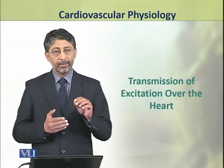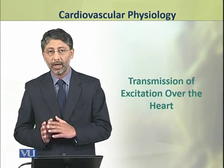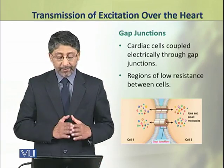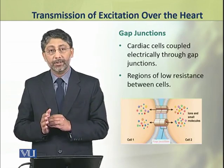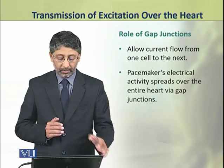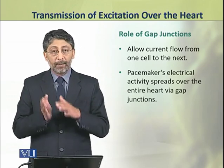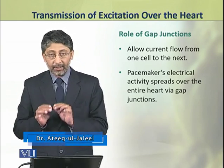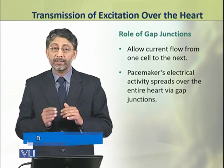In this topic we shall discuss the transmission or spread of excitation over the heart. The cardiac cells are coupled electrically through gap junctions. These gap junctions are the regions of low resistance between the cells, which allow the current to flow from one cell to the next. The pacemaker's electrical activity spreads over the entire heart because of these gap junctions.